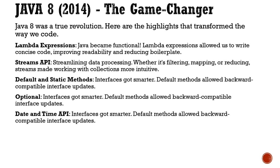Stream API is another important feature introduced in Java 8. This is a way of streamlining the processing of collections where you apply certain layers of logic like filtering, mapping, and reducing. Basically, you take input from a source like a collection or array, then perform operations, and ultimately convert the result. A copy is always created and then intermediate and terminal operations are performed.